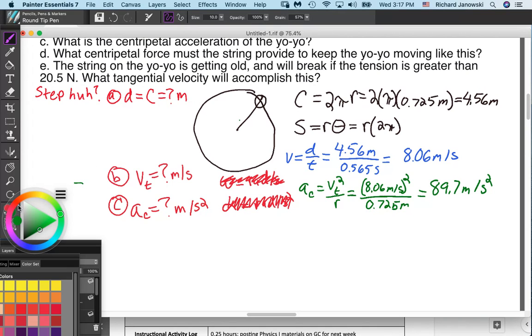For part D, what centripetal force must the string provide to keep the yo-yo moving like this? We are looking for centripetal force, F sub C, in units of newtons. Have we got a formula for centripetal force? I could also ask you, what's the most important thing you will learn in physics all year? Hopefully by now you all know that that is F equals MA. So F centripetal is equal to MA centripetal.